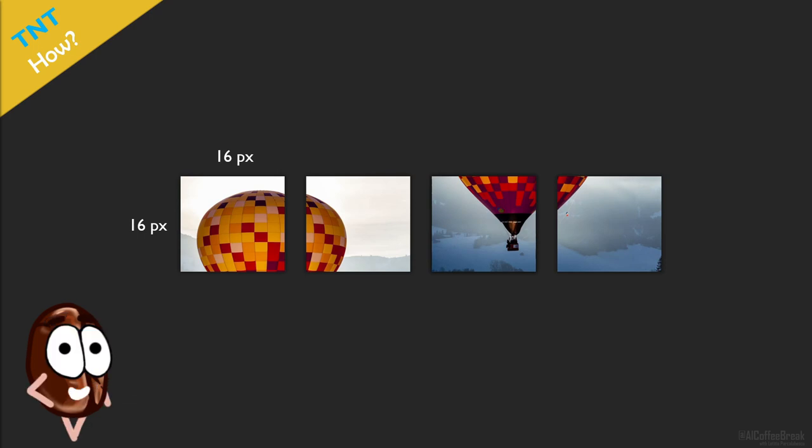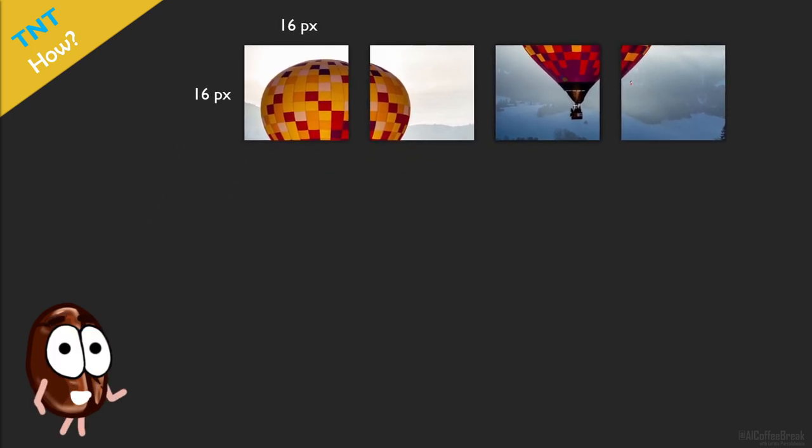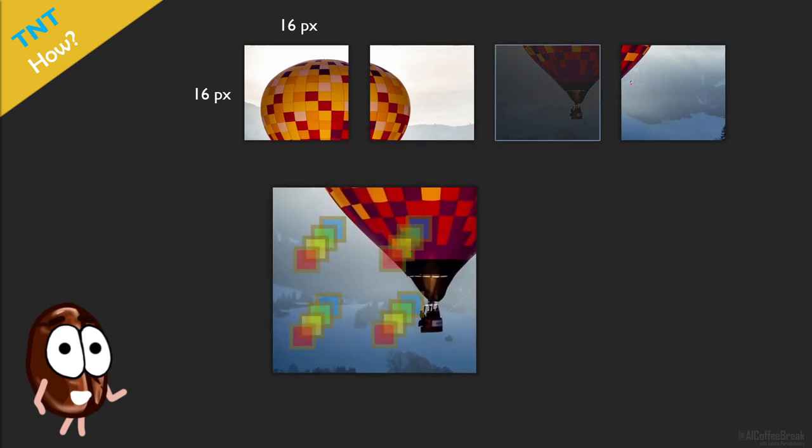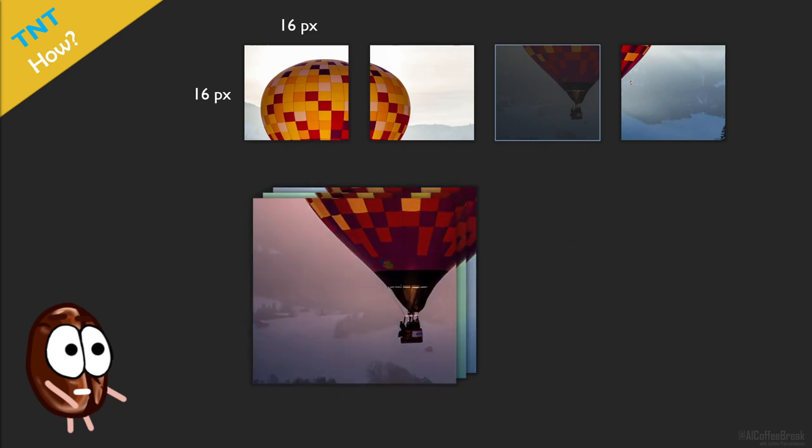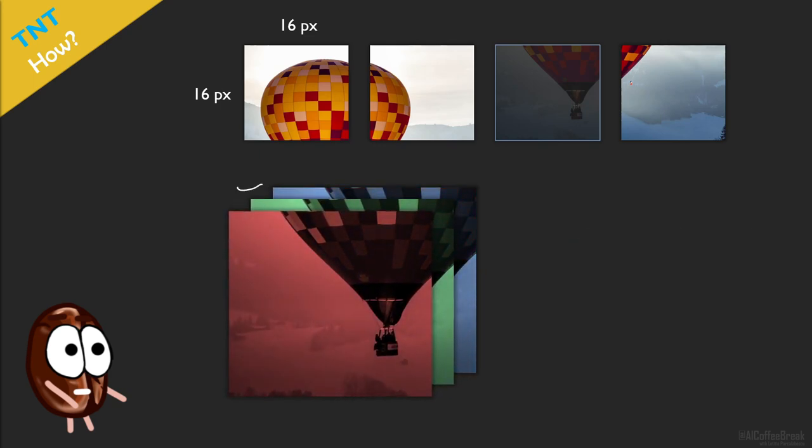But now is where the crazy part happens. For TNT, the authors reshape each patch to a super pixel sequence. What? Let's take it slow. So the idea of TNT is to model patches better than just cramping them into a single vector. For this, each patch, that is actually a stack of three matrices for red, green and blue, is transformed to something else,